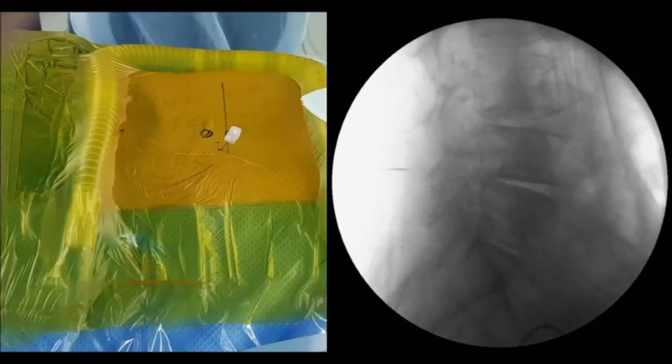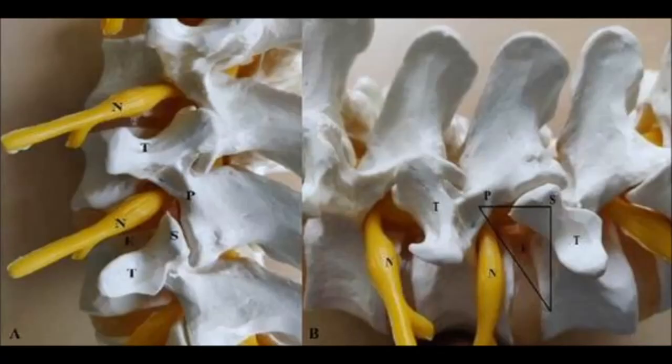Level is confirmed using the spinal needle, and at this point it is important to recall Kambin's triangle. The exiting nerve root occupies the superior aspect of the neural foramen. The empty zone, as described by Kambin, is a safe surgical corridor for the paraspinal approach to disc space, depicted by the triangle in the picture. The superior articulating process is the key anatomical landmark for the foraminal approach.